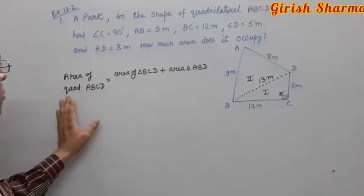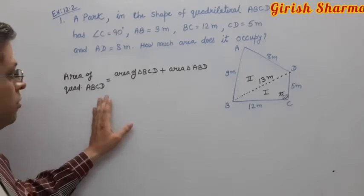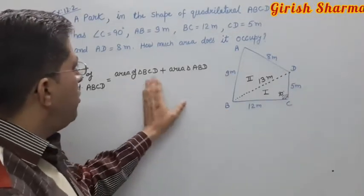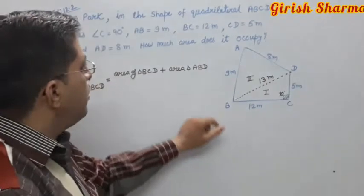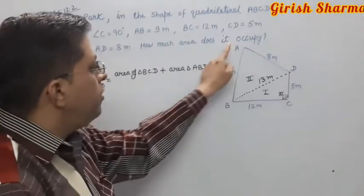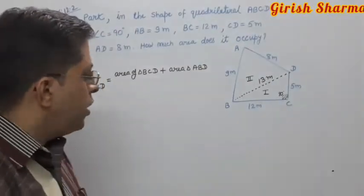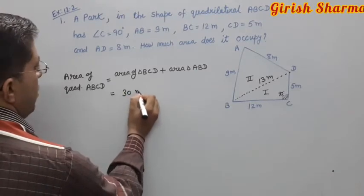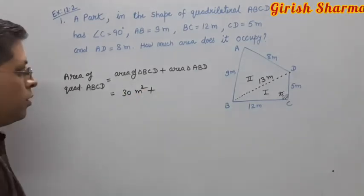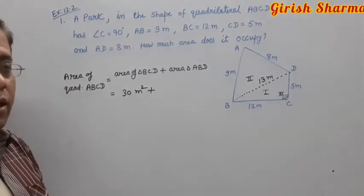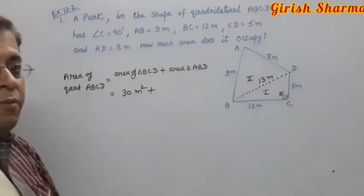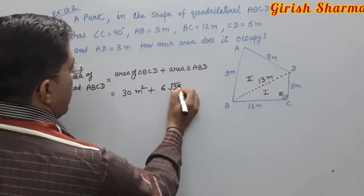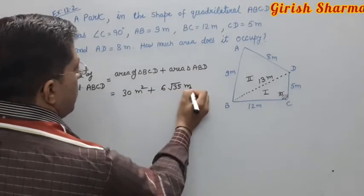Total area of quadrilateral ABCD equals area of triangle BCD plus area of triangle ABD equals 30 plus 6 root 35 meter squared.